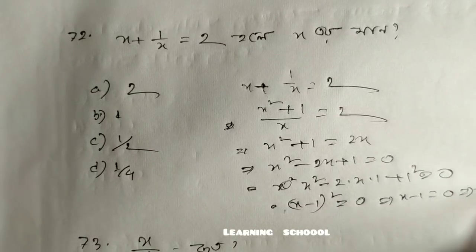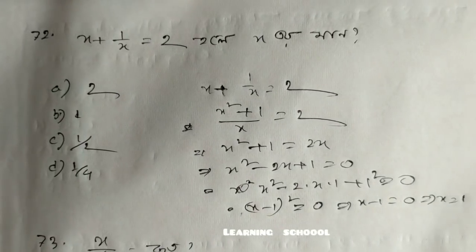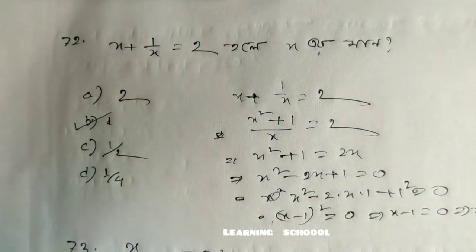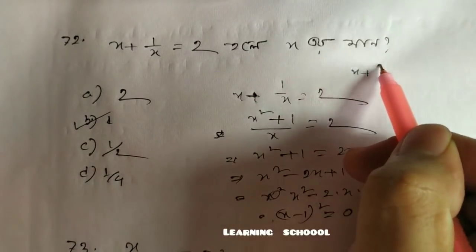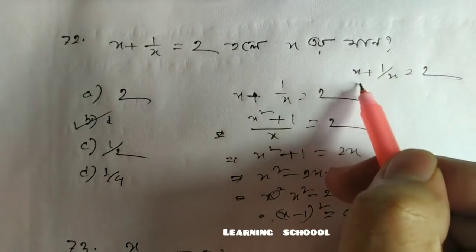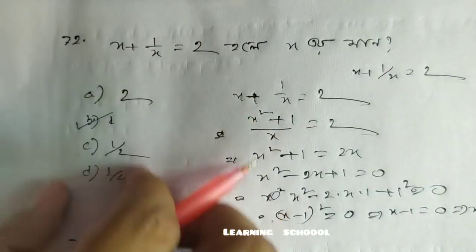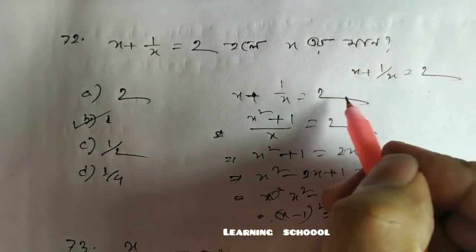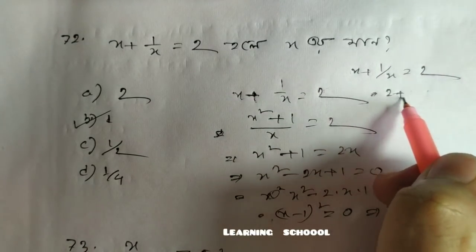That means x equals 1. It is equal to x equal 1. It is equal to 1; x plus 1 by x squared. X is equal to 2.